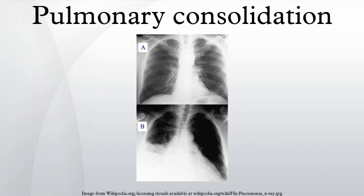A lower expected PAO2 than calculated in the alveolar gas equation may be observed. Radiologically, an area of white lung is typically seen on a standard X-ray. Consolidated tissue is more radio-opaque than normally aerated lung parenchyma, so it is clearly demonstrable in radiography and on CT scans. Consolidation is often a middle- to late-stage feature and complication in pulmonary infections.